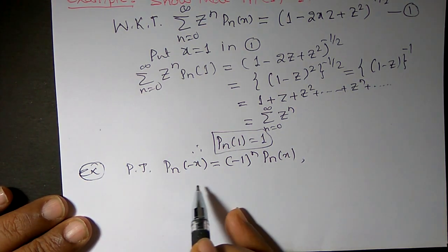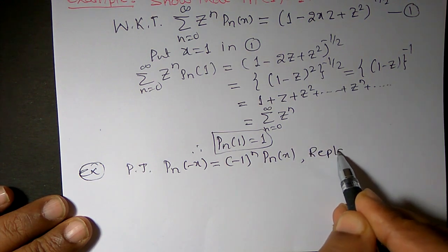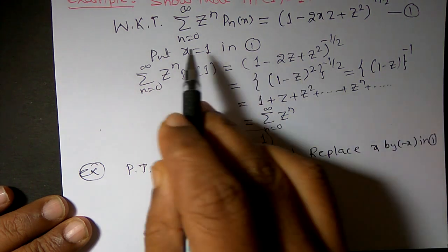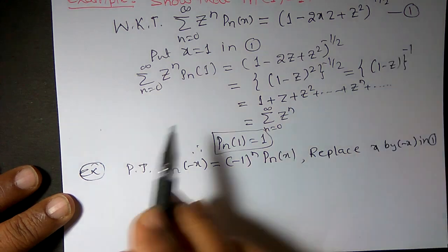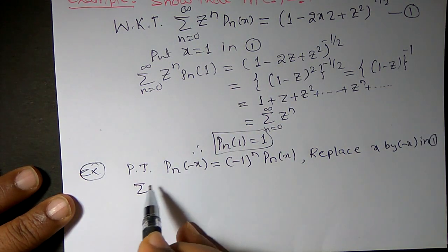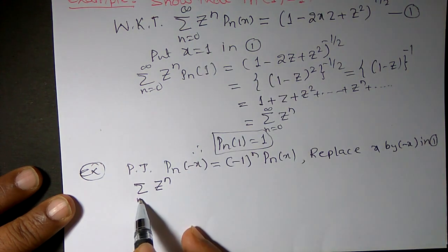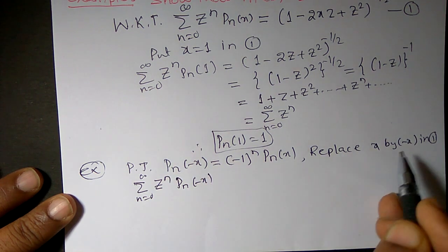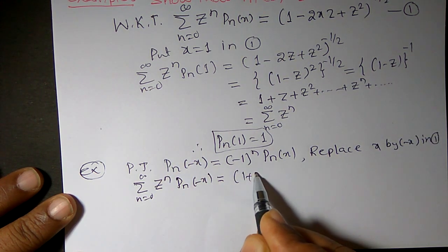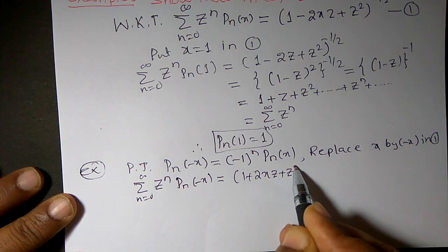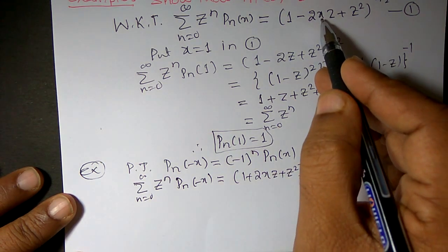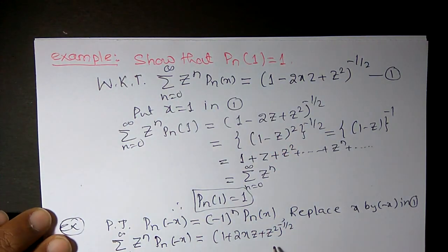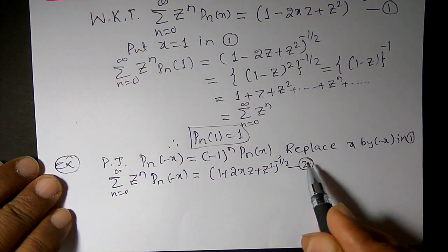To prove left hand side equals right hand side, I am going to replace x by -x in equation 1. Replacing x by -x, I can obtain summation of z^n, n = 0 to infinity, P_n(-x) = (1 + 2xz + z²)^(-1/2), since minus times minus becomes plus. We will call this equation 2.